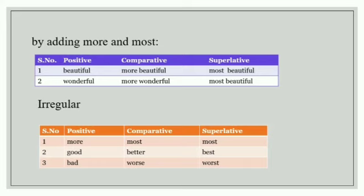Adjectives of more than two syllables form their comparative and superlative degrees by using more and most. For example, beautiful. Comparative will be more beautiful and superlative will be most beautiful.